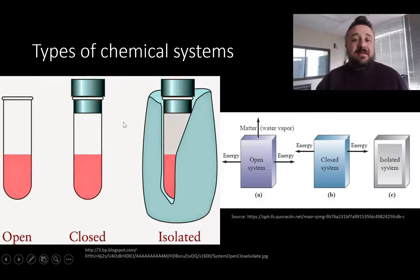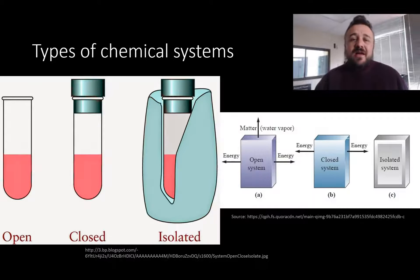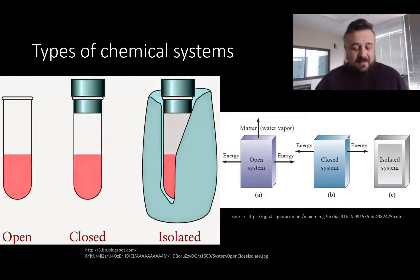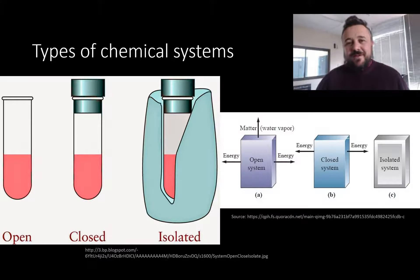Open systems allow matter to leave or enter, and they also allow energy to leave and enter. A closed system allows only energy to leave — matter is stopped from leaving. But an isolated system, like a thermos, is matter can't leave or enter, nor can energy. A perfectly isolated system almost doesn't exist, so thereabouts is good enough.